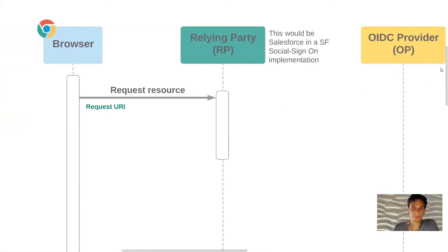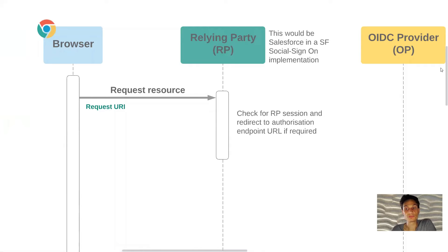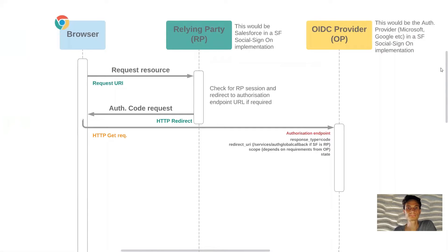The first step: the user via their browser or app is requesting a protected resource of the relying party. The relying party will check if this person is already logged in, and if they're not, it'll kick off this flow. The first step for the relying party is to redirect to the OpenID Connect provider's authorization endpoint to request an authorization code, since this flow assumes we don't already have an access token configured.